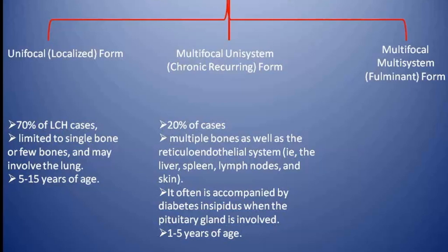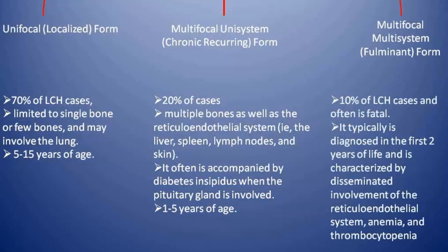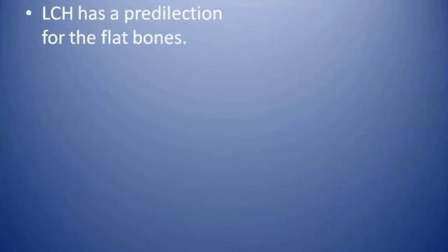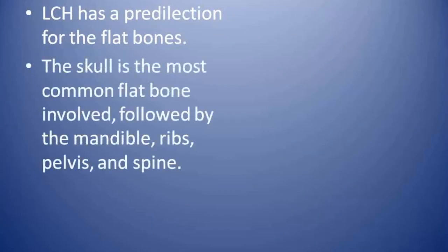The multifocal unisystem form is often accompanied by diabetes insipidus due to involvement of the pituitary gland, and the age group involved is 1 to 5 years. The third and most severe fulminant form is the multifocal multisystem form, comprising 10% of LCH cases. It is often fatal, typically diagnosed in the first two years of life, and characterized by disseminated involvement of the reticuloendothelial system leading to anemia and thrombocytopenia.